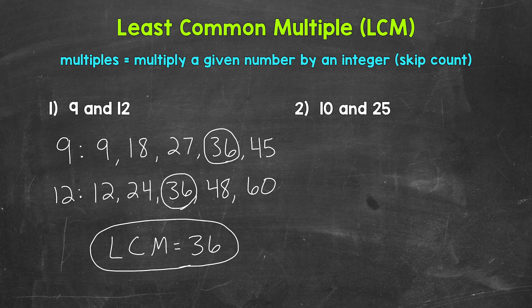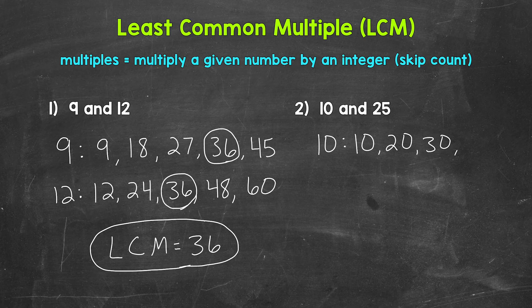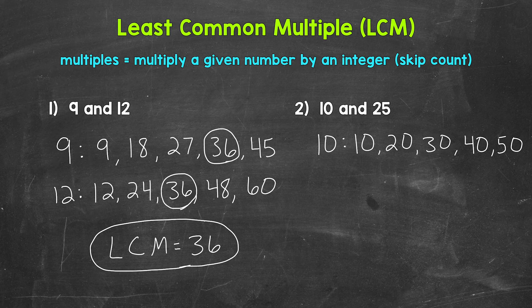Let's move on to number 2, where we have 10 and 25. Let's start with some multiples of 10. So 10 times 1 is 10, 10 times 2 is 20, 10 times 3 is 30, 10 times 4 is 40, and 10 times 5 is 50.